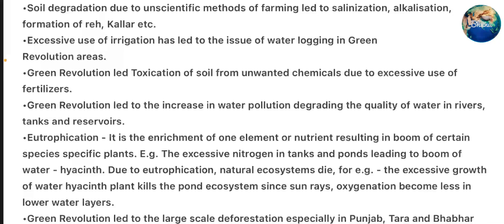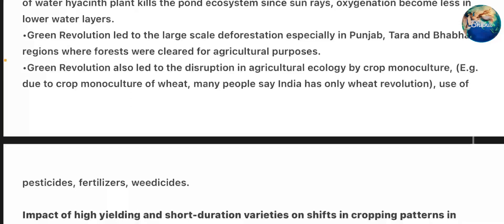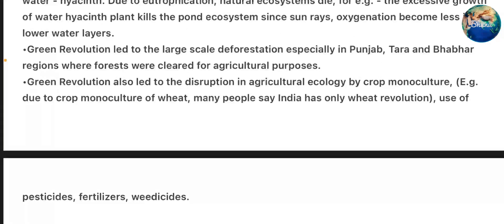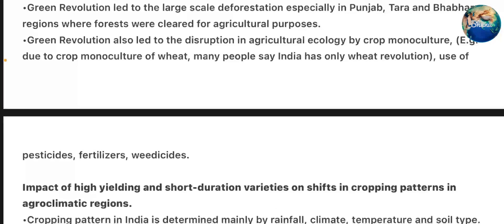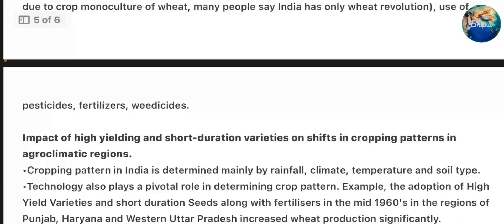Since sun rays are blocked, oxygenation becomes less in the lower water layers. Green Revolution led to large-scale deforestation especially in Punjab, Terai, and Barber regions where forests were cleared for agriculture purposes. Green Revolution also led to disruption in agricultural ecology by crop monoculture. For example, due to crop monoculture of wheat, many people say India has only a wheat revolution. Use of pesticides, fertilizers, and weedicides caused further damage.